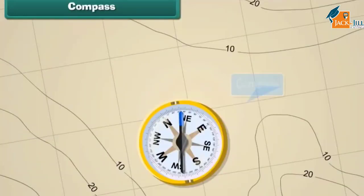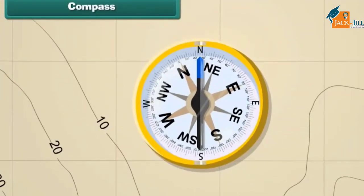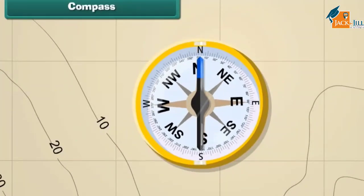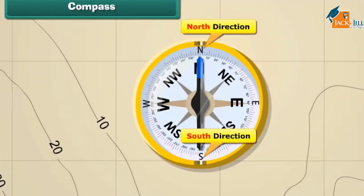This is a compass. It is a device we use to find directions. The compass has an arrow with a head and a tail. The head always points to the north and the tail to the south.